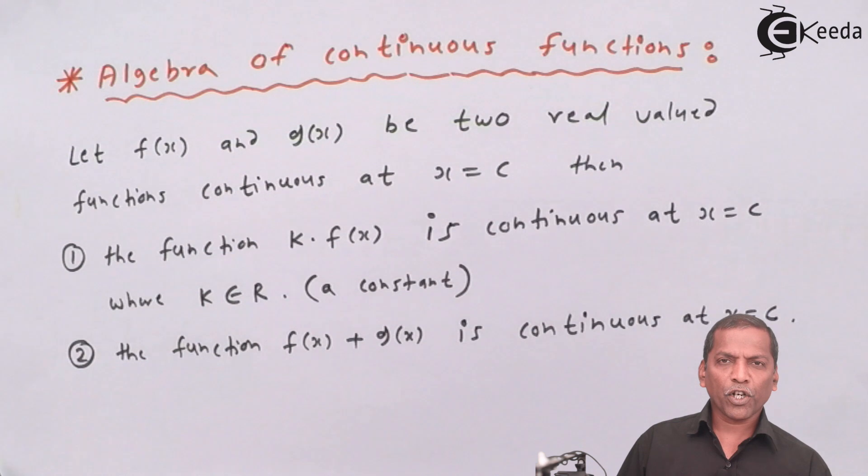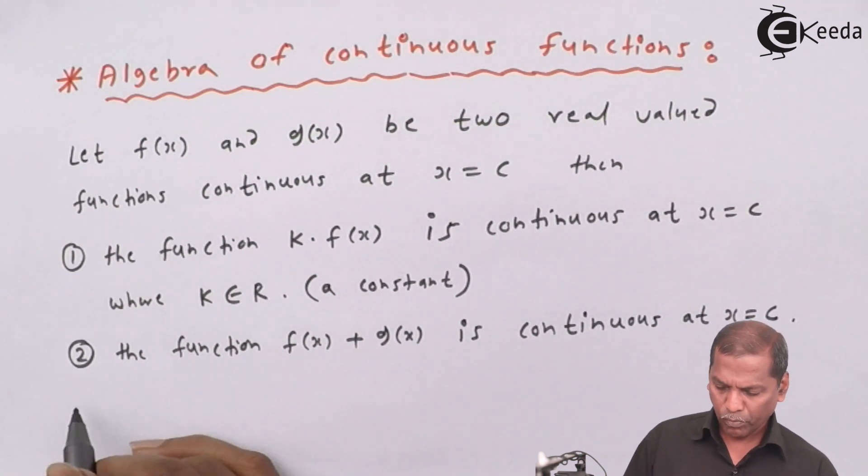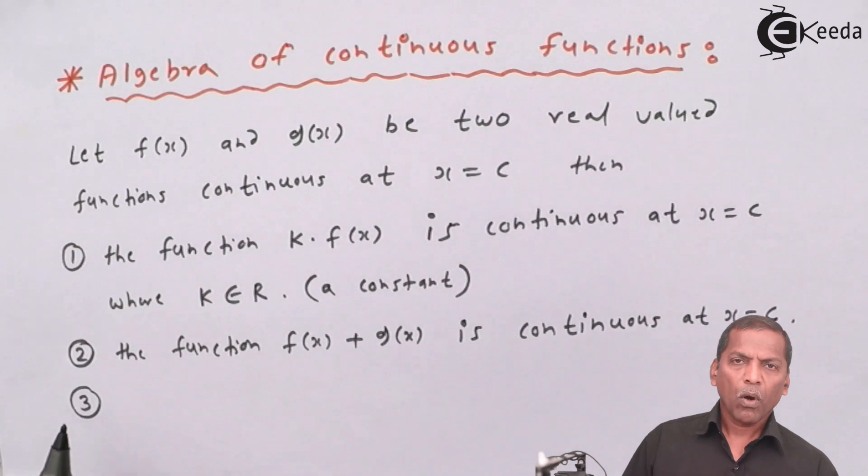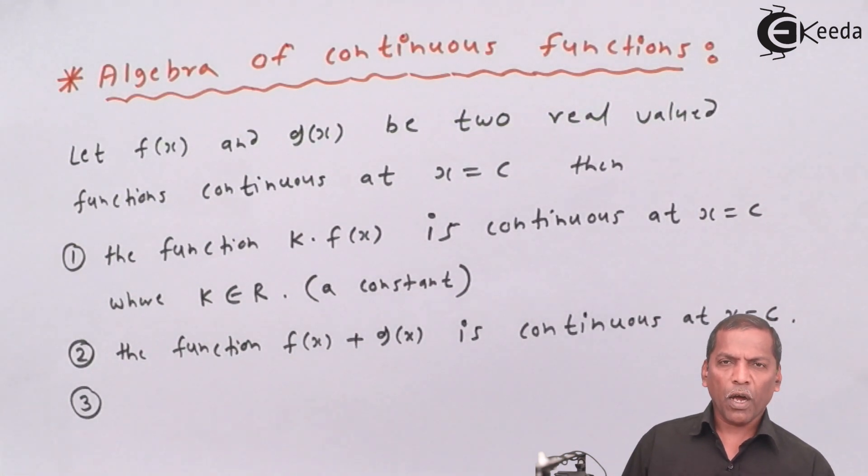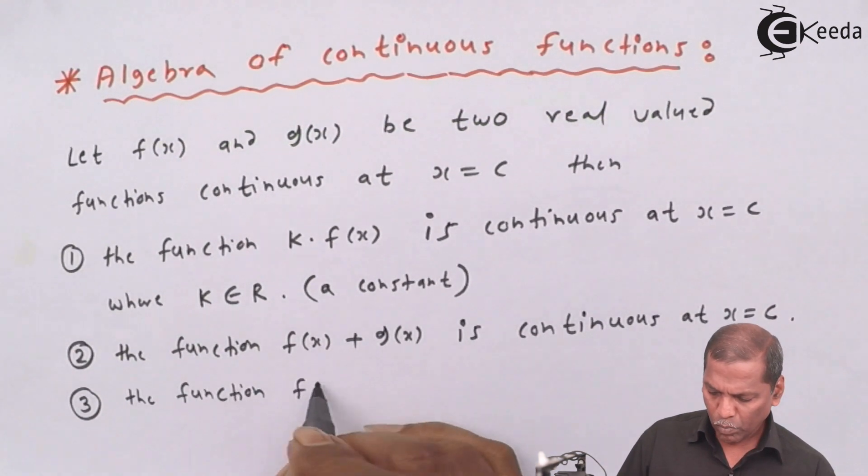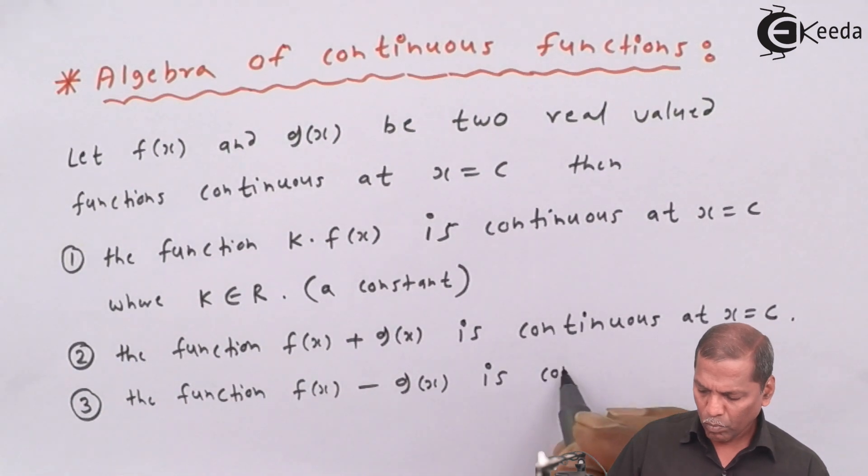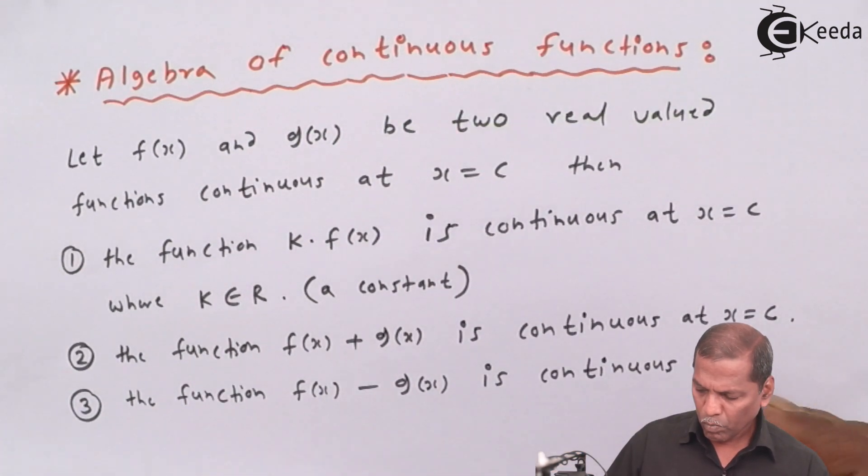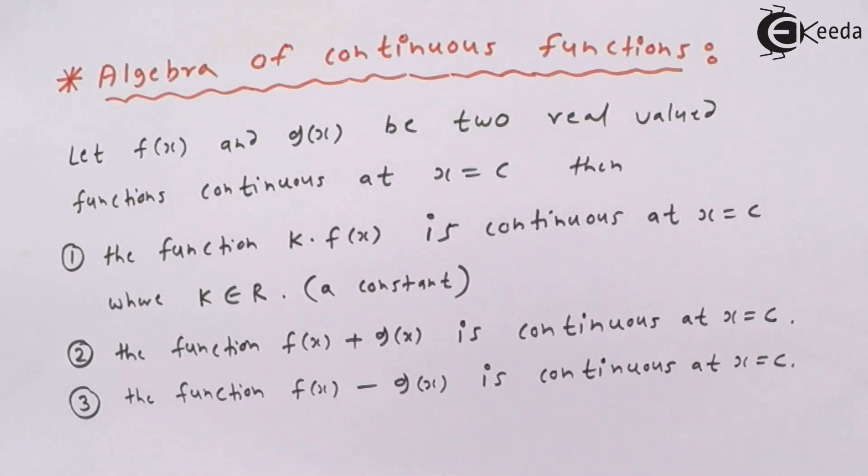Number three, the function f(x) minus g(x) is continuous at x equal to c. It means subtraction of two continuous functions is again continuous.